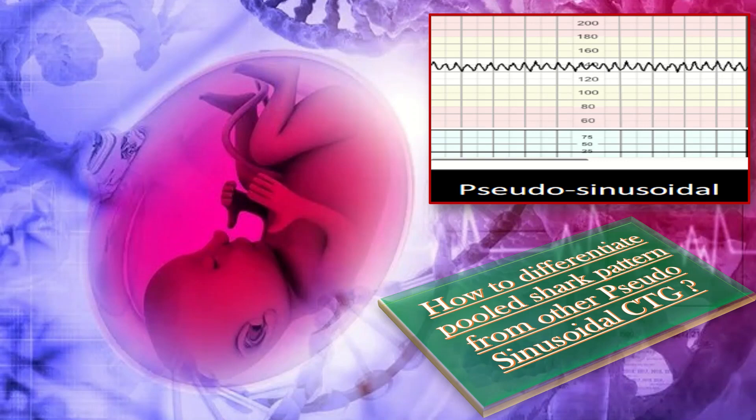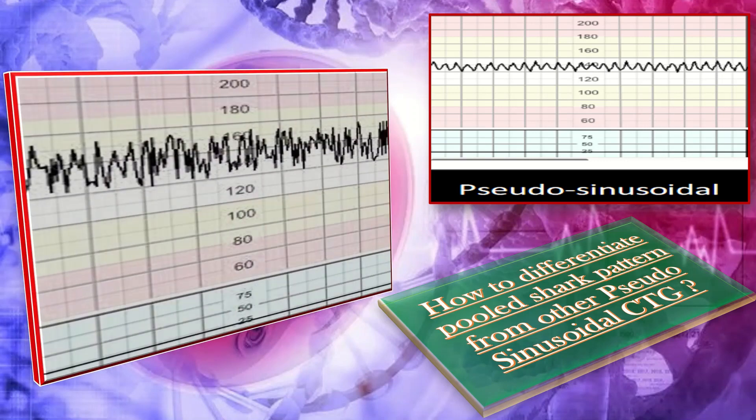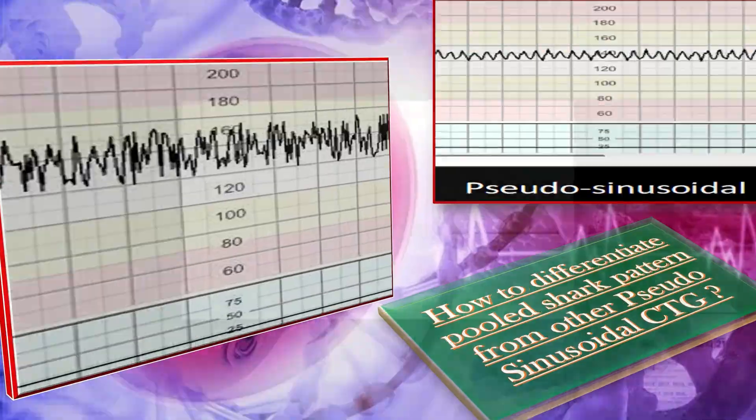On the other hand, the presence of the sawtooth or pool shark teeth pattern, termed the atypical sinusoidal pattern, resembles the sinusoidal pattern but with a more jagged sawtooth appearance rather than a smooth sine wave form. That was all about the pool shark wave pattern of the CTG.